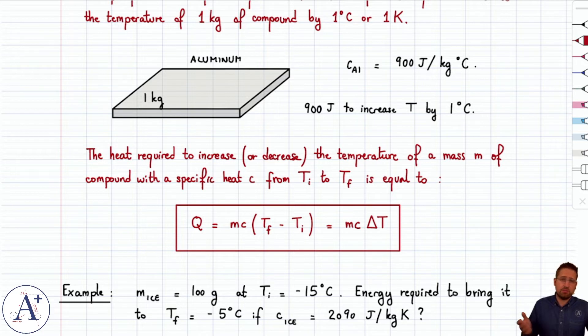If delta T is positive, Q is positive. Makes sense. You have to supply heat to increase temperature. If delta T is negative, Q is negative. Makes sense. You have to remove heat out of your pure compound to drop its temperature by delta T.